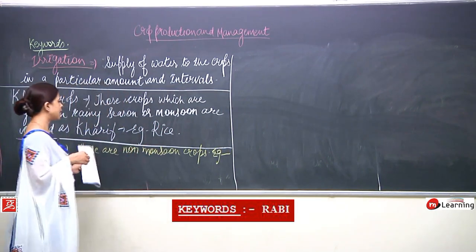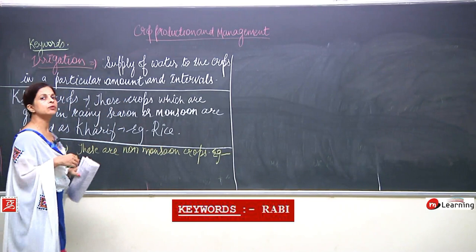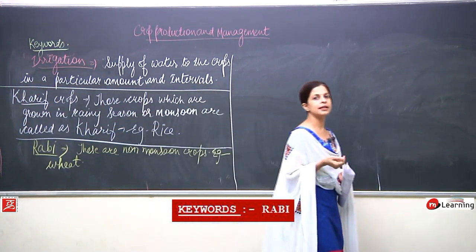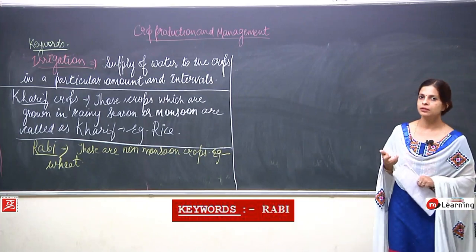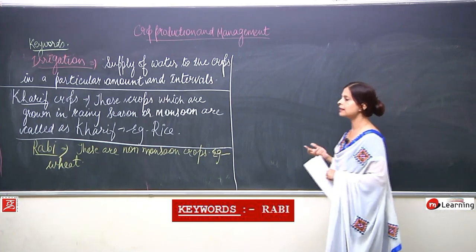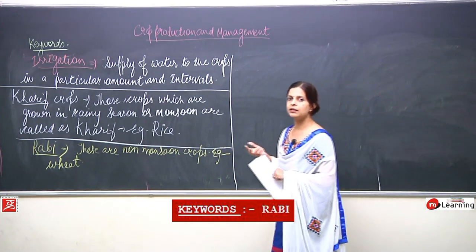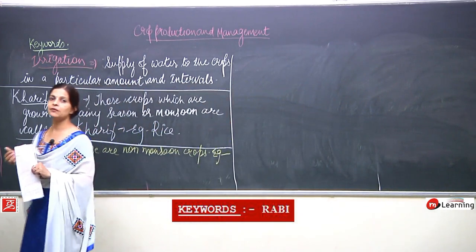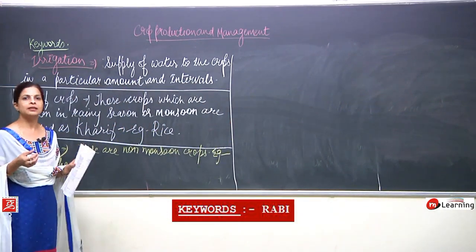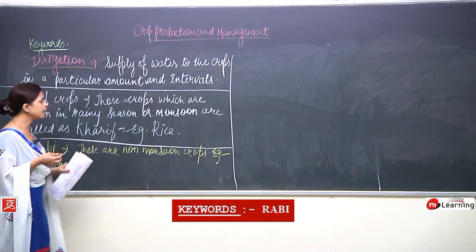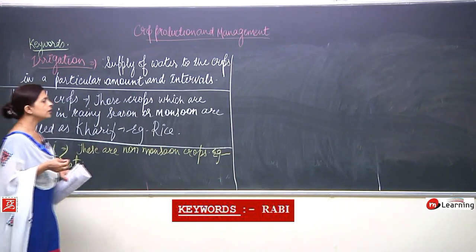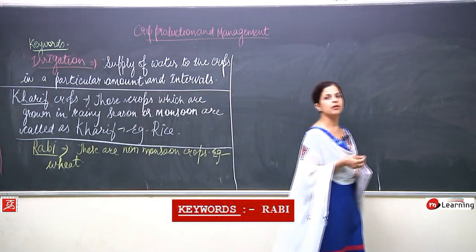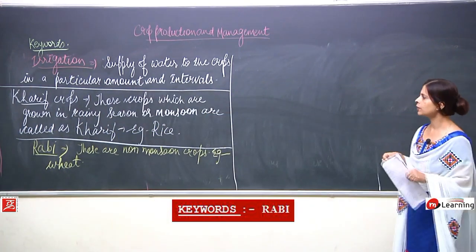For example, if you try to grow rice in summer days — can you do this? Is it possible? Just have a thought and be ready for the answer when these questions come. For now, Khareef crops are monsoon crops and Rabi crops are non-monsoon crops.